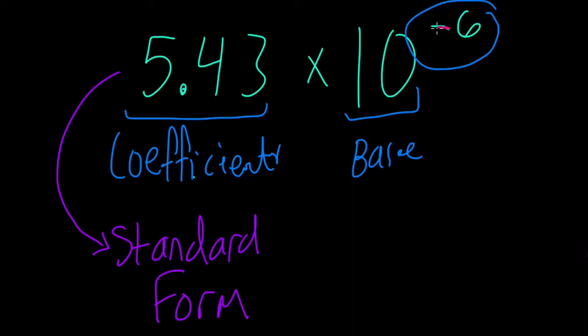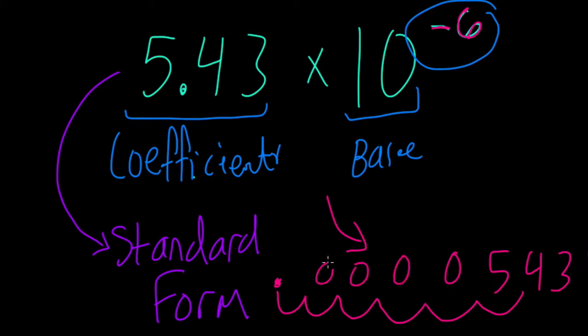So here, the negative exponent, negative 6, just means to move your decimal from where it is right now in the number 5.43, six places to the left. So, 1, 2, 3, 4, 5, 6. You can envision that that would create 1, 2, 3, 4, 5 zeros. And that's our answer.